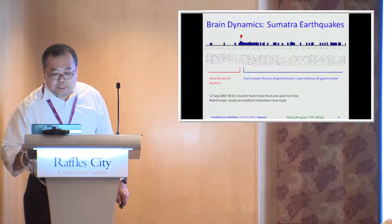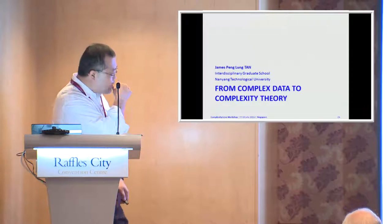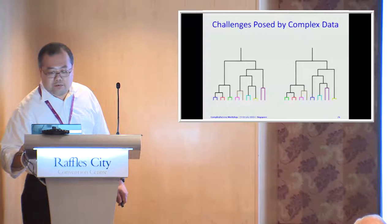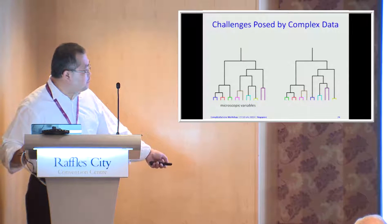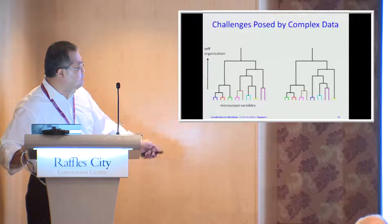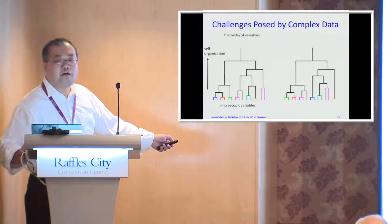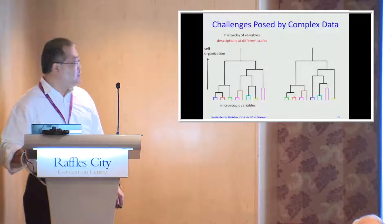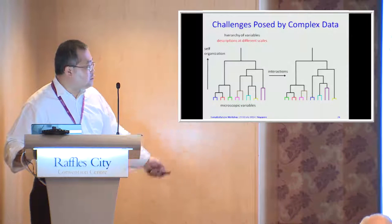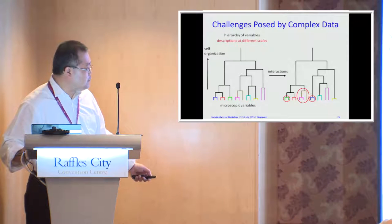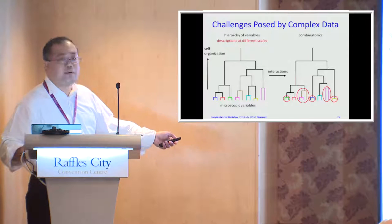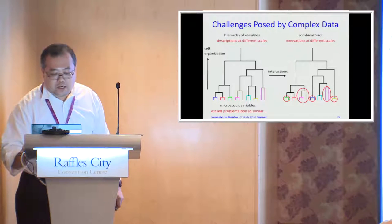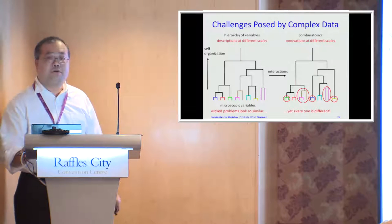Let me now summarize how we can get from complex data to complexity theory. The challenges posed by complex data are: first, there are microscopic variables; through self-organisation among these microscopic variables, you end up with a hierarchy shown in the dendrogram, with different descriptions possible at different scales. Through interactions, these dendrograms can rearrange themselves and swap places. There is not just a hierarchy but also a lot of recombination. We can think of these as innovations at different scales, which explains why wicked problems look similar but are still each different.